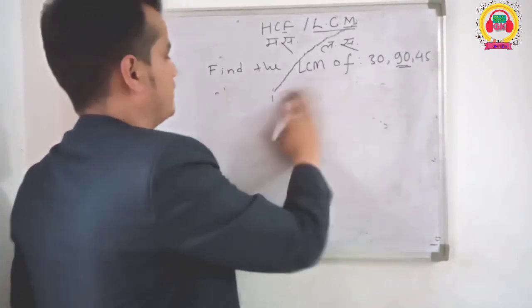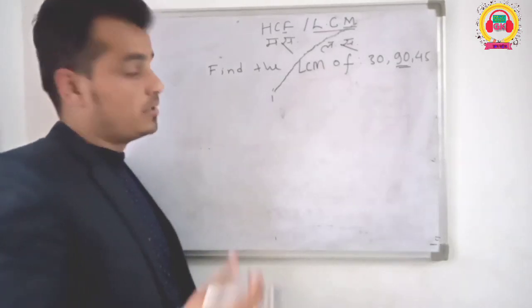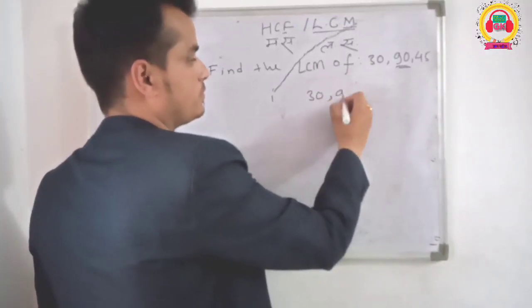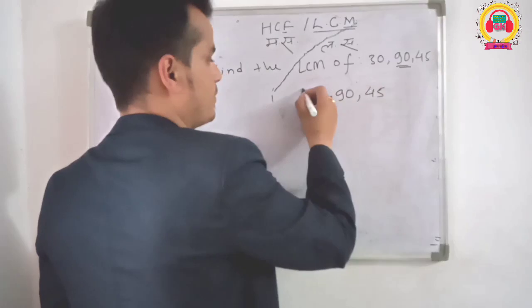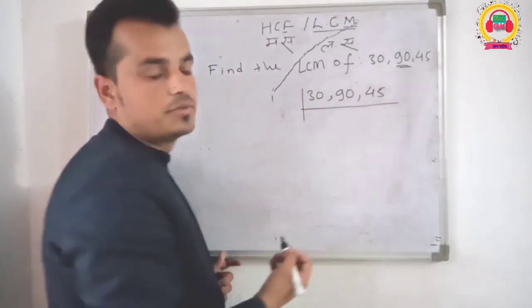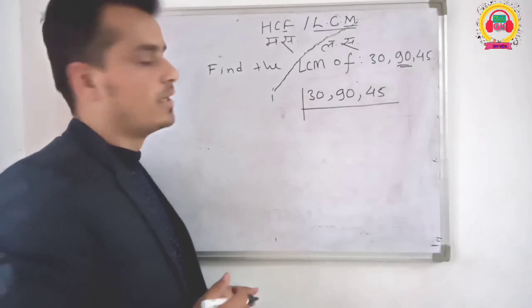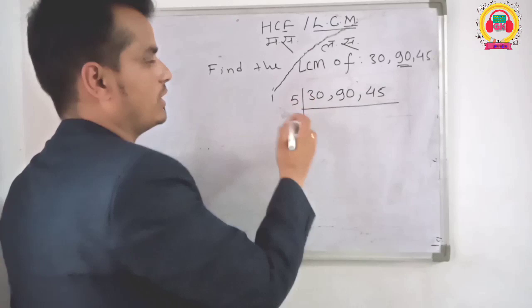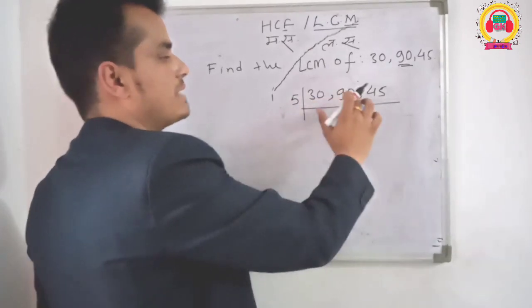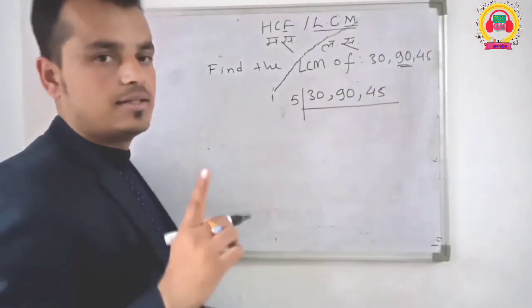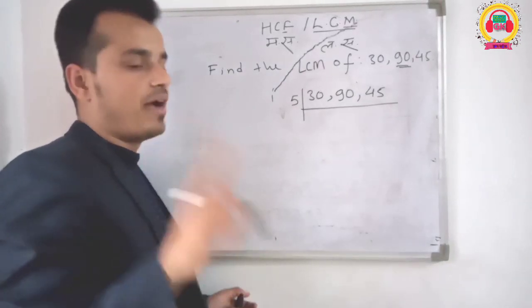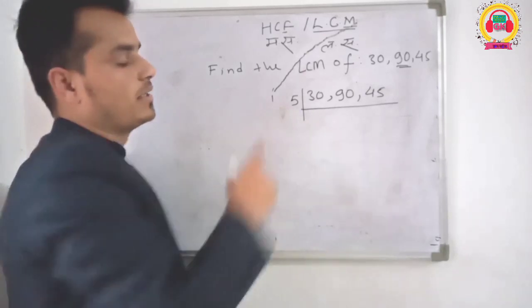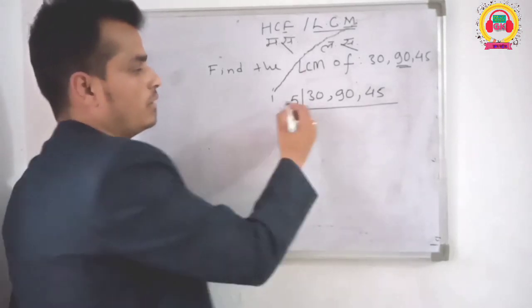If you look at LCM, you can see in three small parts. Directly you can see that: 30, 90, 45. The last digit is 0 and 5, so we can divide by 5.